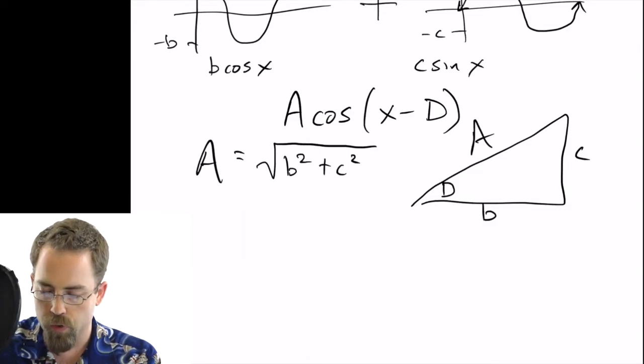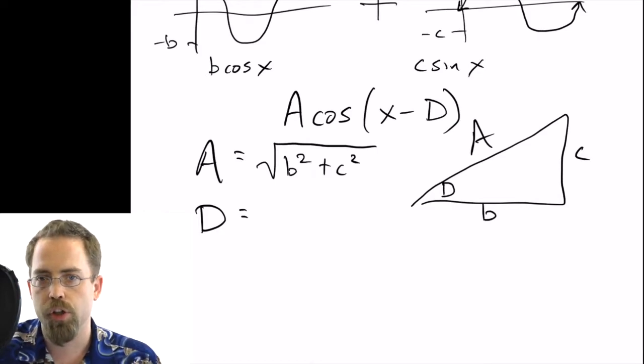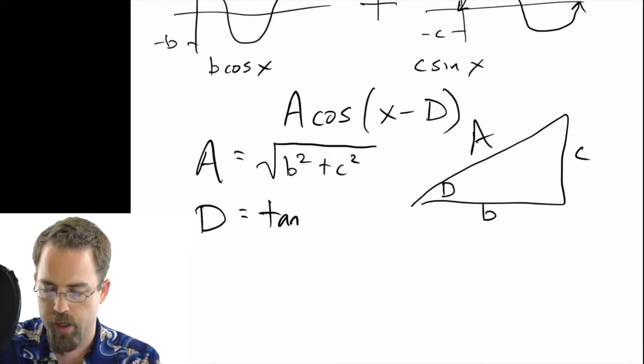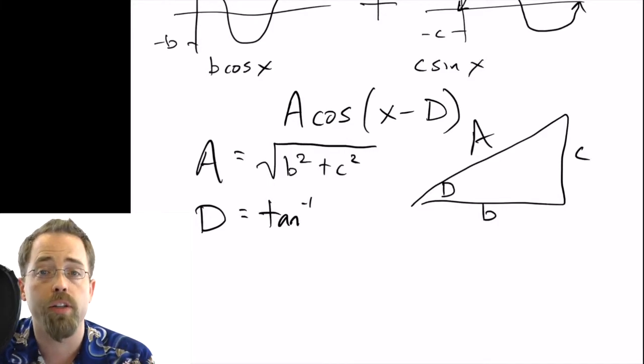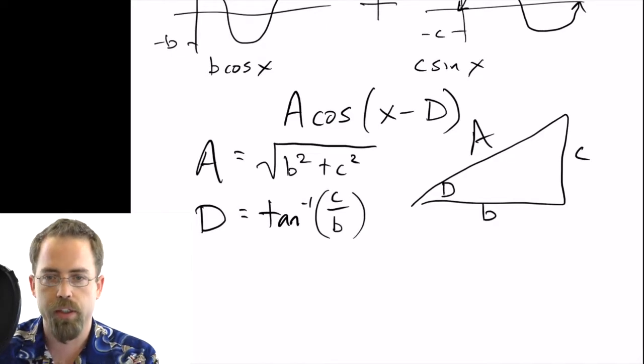So if you want to find d, what trig function involves opposite and adjacent? It's tangent. So we've got the sides and we want the angle. So we want arc tangent. Arc tangent c over b will get us that.